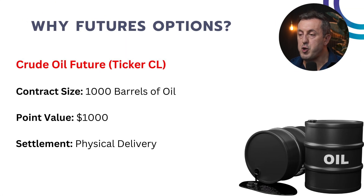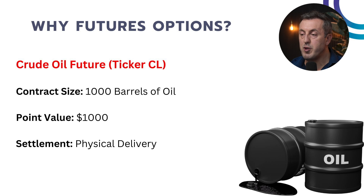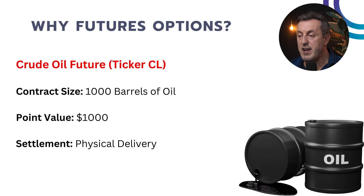Now let's break down how futures options work. Consider buying a futures contract on crude oil. This contract commits you to purchase a set amount of oil, typically 1,000 barrels, at a predetermined price on a future date. Imagine the price per barrel to be around $90 — this would give you an exposure per contract of $90,000. If the price moves by one point, your profit or loss will be $1,000. As you might imagine, this can be daunting for retail investors due to the significant exposure and potential for substantial losses.